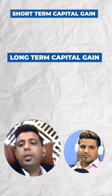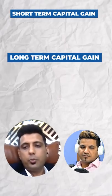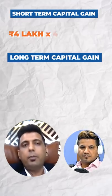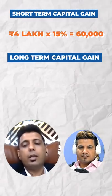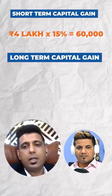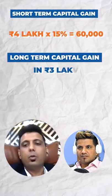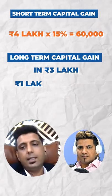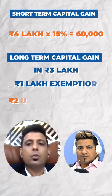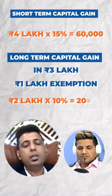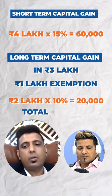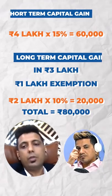Short term and long term is simple. You have 4,000,000 at 15%, and for long term: 3,000,000 minus 1,000,000 exemption leaves 2,000,000 at 10%, which is 20,000. Total tax so far is 80,000.